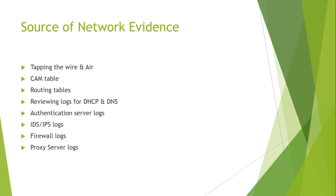Where can we pull network evidence from? We can tap the wire — the physical connection — or pull it out of the air wirelessly. We could look at a switch's CAM table for MAC addresses, a router's routing table, or network infrastructure services like DHCP and DNS logs. We could look at authentication server logs, overall system logs, security appliances like IDS, IPS, or firewall logs, or even proxy server logs. All of these generate logs we can use to analyze and collect data.